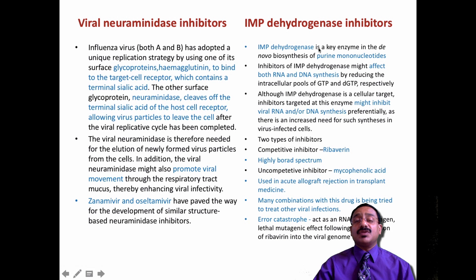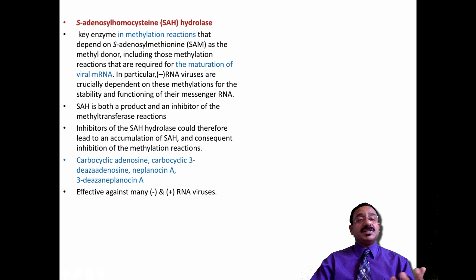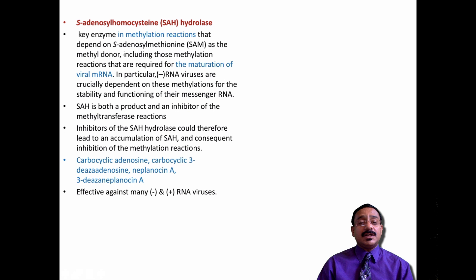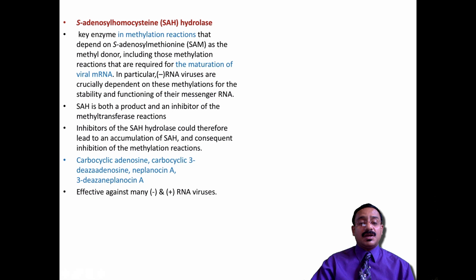IMP dehydrogenase inhibitors: this enzyme is key in the biosynthesis of purine mononucleotides added during replication. Hampering this enzyme affects both RNA and DNA synthesis. There are broad-spectrum antivirals focusing on competitive inhibition — for example ribavirin. The other enzyme target is S-adenosyl homocysteine (SAH) hydrolase, used in methylation reactions where a methyl group is added to strengthen the amino acid, particularly on the negative-strand RNA. This methylation helps in the stability and function of messenger RNA without degradation, and inhibiting it is also effective against certain RNA viruses.